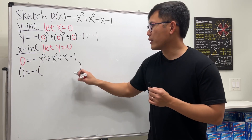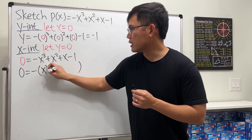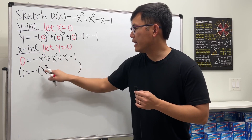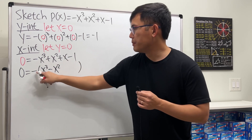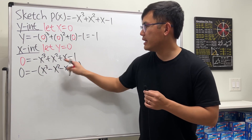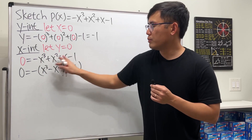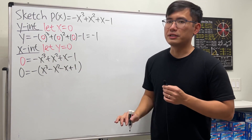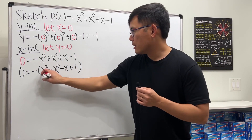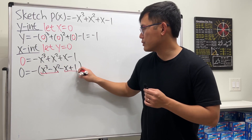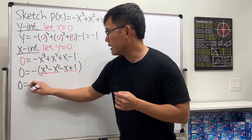So we factor out negative from the whole thing. This gives us zero equals negative times (x³ - x² - x + 1) — you pretty much just change all the signs. Now let's do factor by grouping: first two terms and then the last two terms, keeping the negative out front.